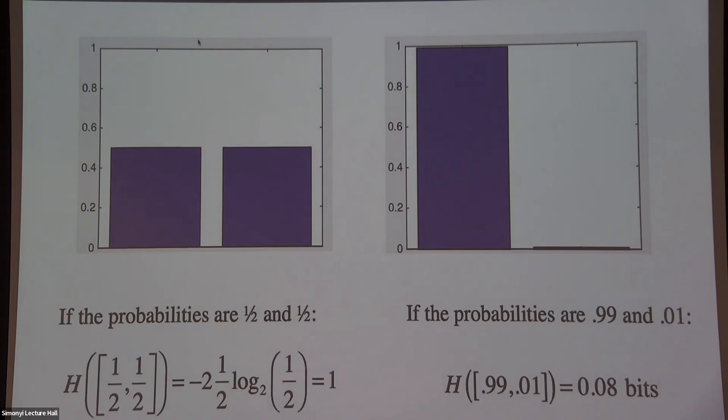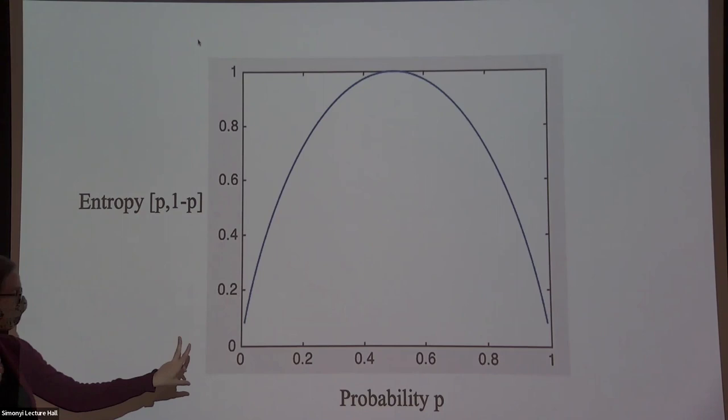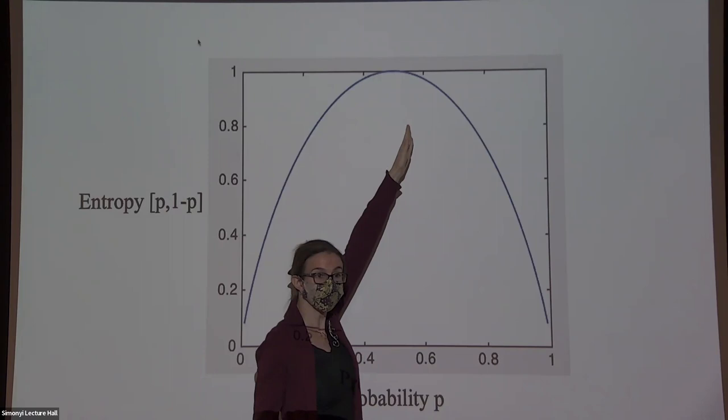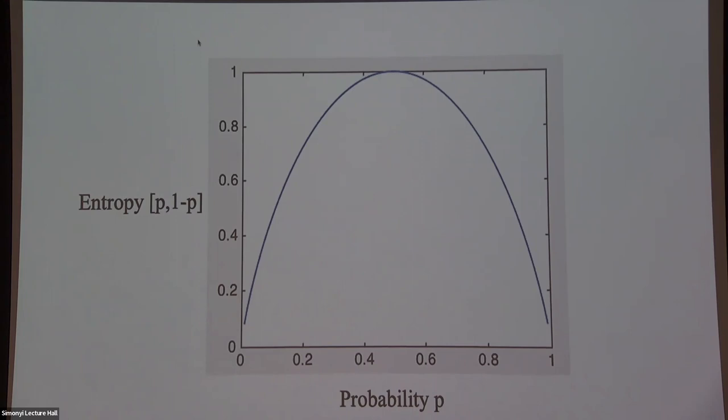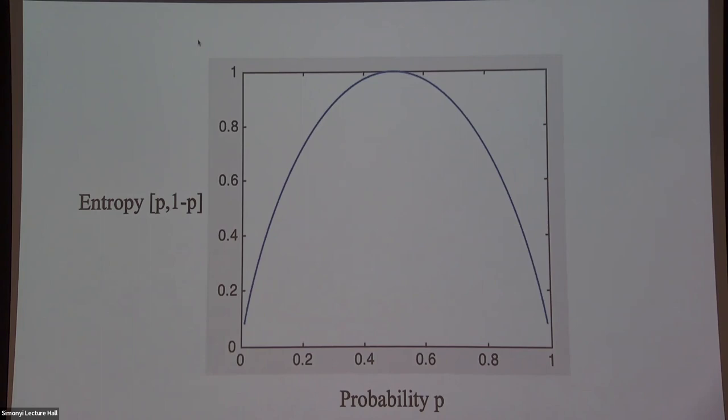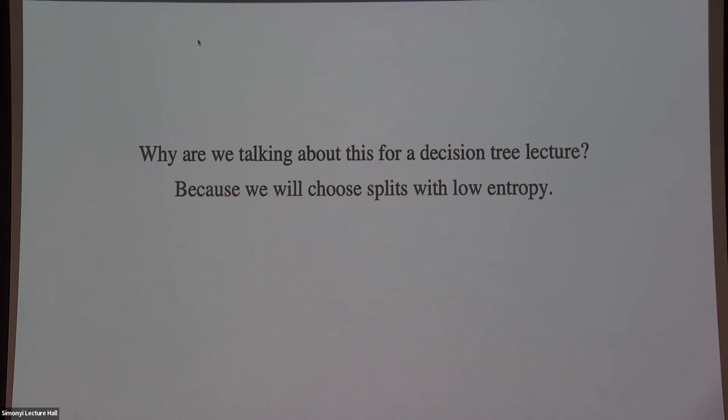We can plot entropy as a function of p. If the probability of landing heads is half and tails is half, you're at the highest possible entropy. Otherwise it gets lower. For decision tree splitting, we're going to want things at the extremes — all positives or all negatives — because that means you've got a pure node. We're talking about this because we want to choose splits that have low entropy.